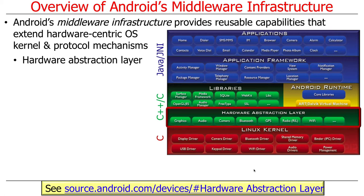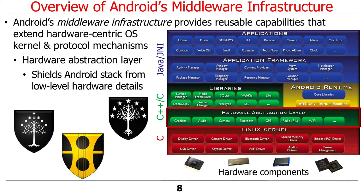One of the layers we'll talk about is the hardware abstraction layer, or HAL. It sits on top of the operating system kernel but below the other things. You can think of the hardware abstraction layer as shielding the higher layers of Android from low-level hardware details.